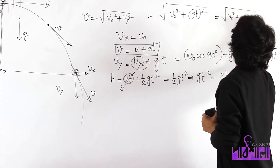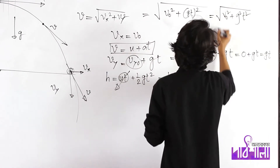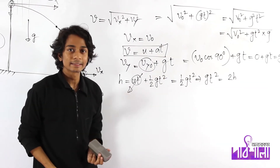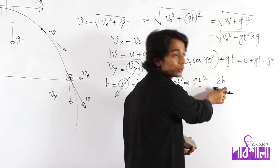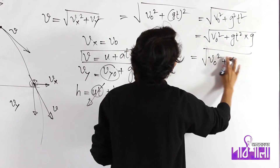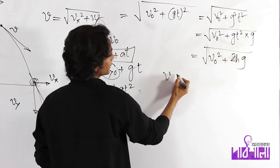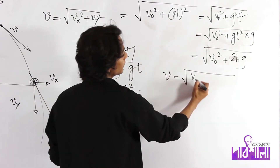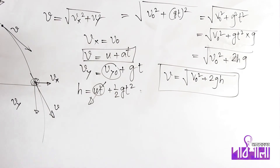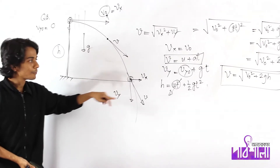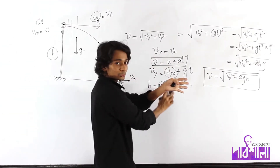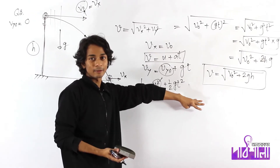We will write V0 squared plus gt squared. You can write V0 squared plus gt squared into g. So gt squared equals 2h. Therefore we write V0 squared plus 2gh. Physics will be consistent — here you see the difference.